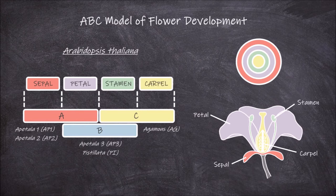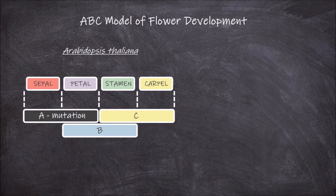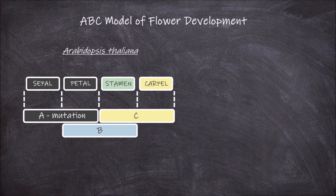Mutations in any of these genes affects the development of these whorls. A wild type flower with no mutations in any of the gene groups will present with all four flower whorls. Mutations in the A genes affects the two outermost whorls, the sepals and the petals. In mutants lacking A genes, no sepals or petals develop, as both these require the expression of A genes either alone or in conjunction with B genes to develop.